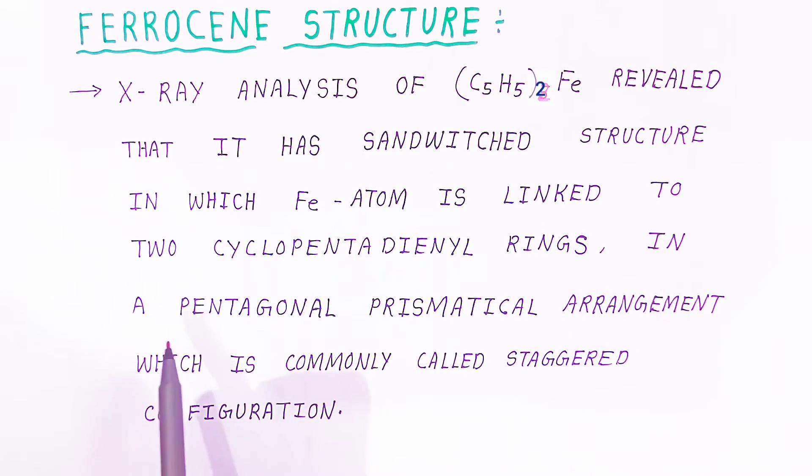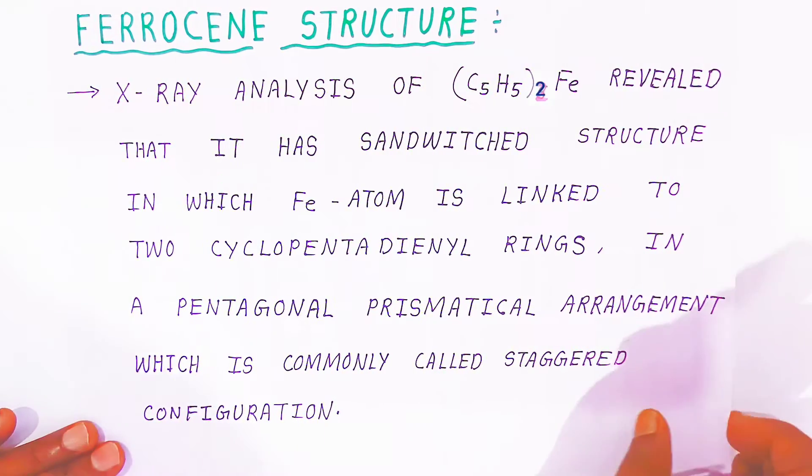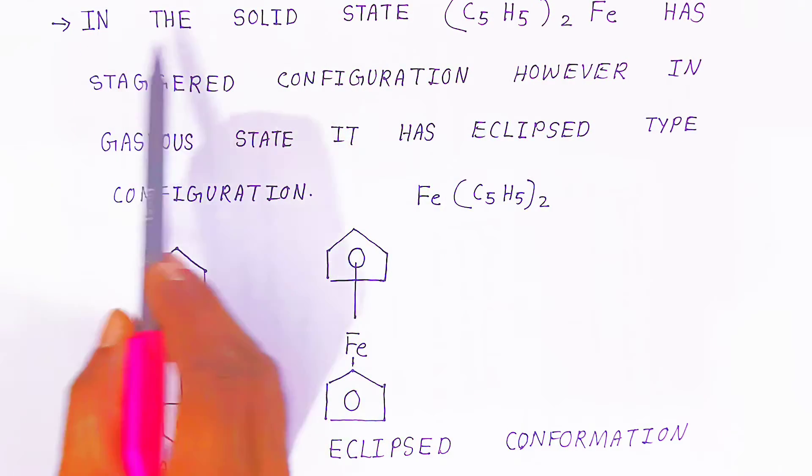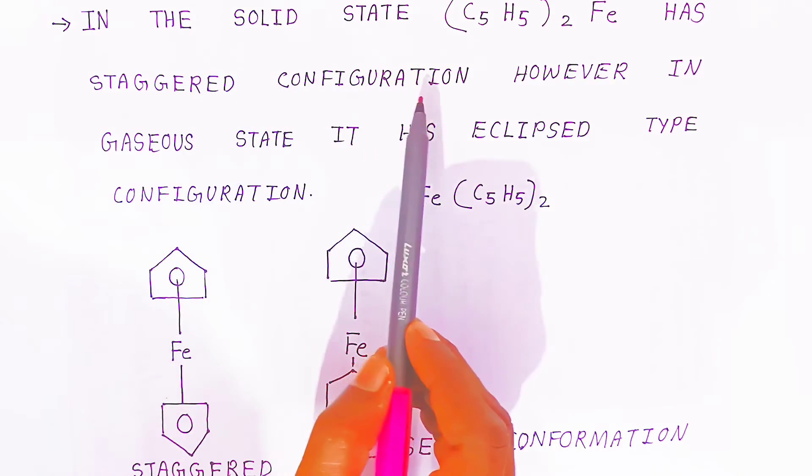In a pentagonal prismatic arrangement which is commonly called staggered configuration. In the solid state, ferrocene has staggered configuration.